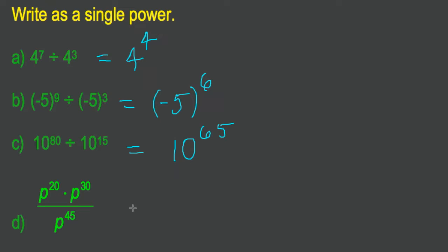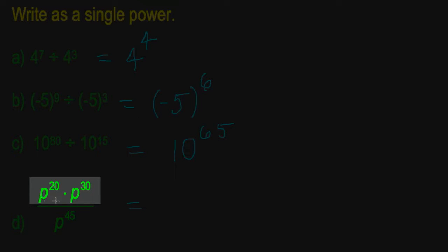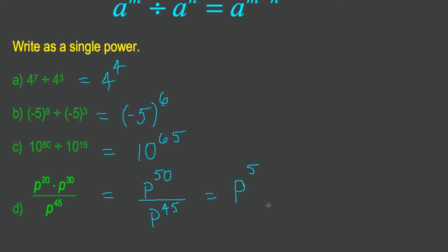We can extend that to variables as well. I have p to the exponent 20 times p to the exponent 30 divided by p to the exponent 45. I'm actually bringing in our previous rule, the multiplication rule, and combining it with the division rule. Here's how it works. I look at the top, the numerator, and I am simply looking at p to the 20 times p to the 30. I'm using my rule from before, which says keep the base the same, add the exponents. 20 plus 30 is 50. Then, after I'm finished, I will perform my division rule. So I've got p to the 50 divided by p to the 45. Keep the base the same. Subtract the exponents. 50 subtract 45 is 5. It's as easy as that, and I'm out of time.